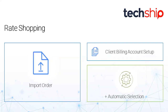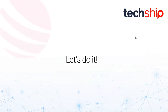When it comes to rate shopping, you import orders into TechShip typically without a carrier. There are several approaches: carrier-versus-carrier rate shopping — for example, getting the best rate between FedEx, UPS, and USPS — or rate shopping within a single carrier you already want to use. Depending on the contracts you have, you might have better rates for one service than another. This requires importing your order into TechShip with the client billing account set up, and then TechShip will do the automatic selection based on your criteria. Let's deep dive into how to use these features.